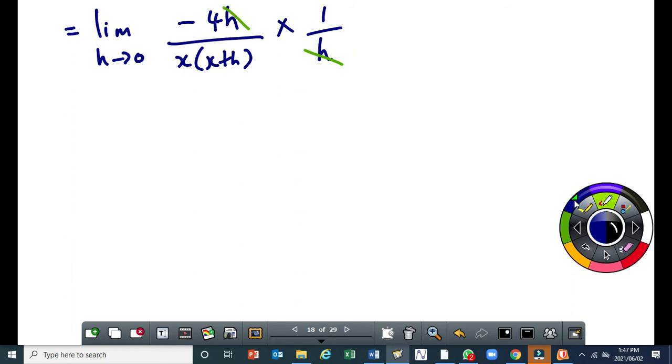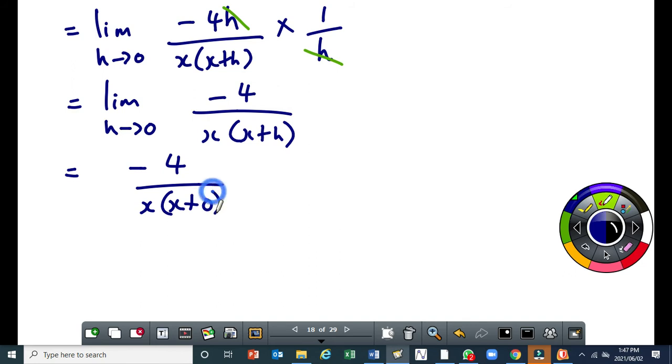So you'll be left with minus 4 over x times (x+h) times 1, which will give you a limit as h tends to 0 of minus 4 over x times (x+h). Then, now I can substitute my h equal to 0, which will give me minus 4 divided by x times (x+0). And the final answer will be negative 4 over x². So that will be the derivative.